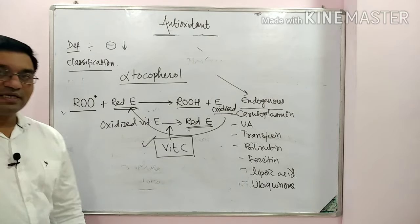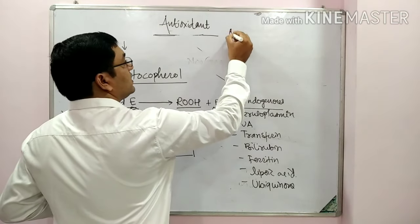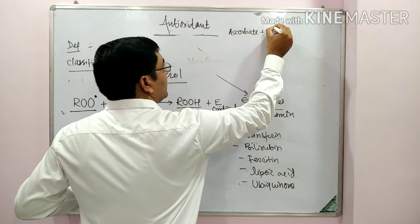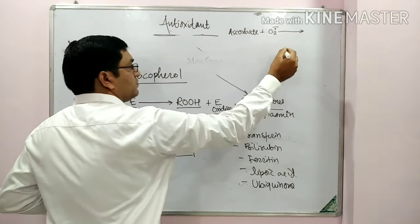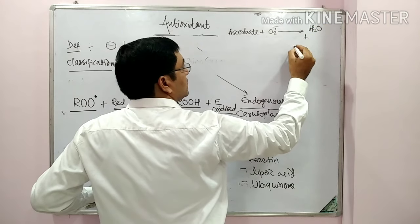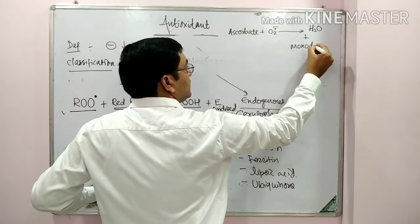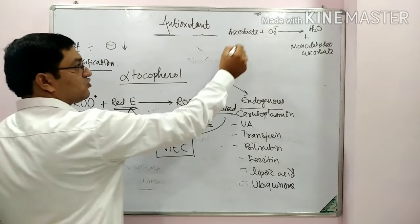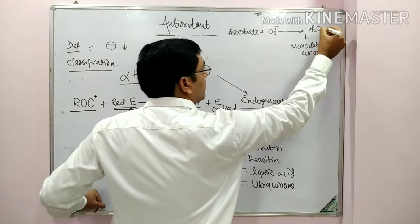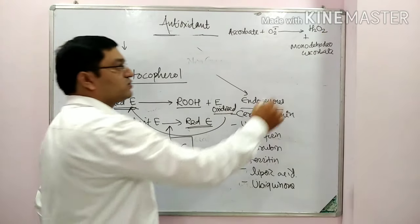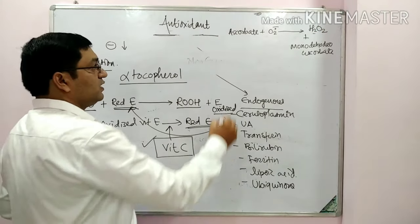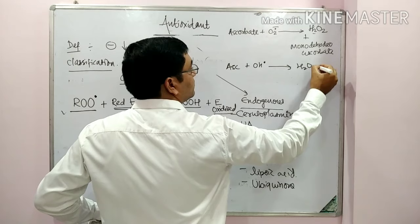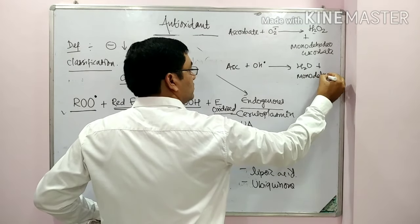Vitamin C also has two direct antioxidant roles. First, ascorbate combines with the superoxide anion radical to form hydrogen peroxide and monodehydroascorbate; the hydrogen peroxide is then converted into water by catalase and peroxidase. Second, ascorbate combines with the hydroxyl radical to form water and monodehydroascorbate.